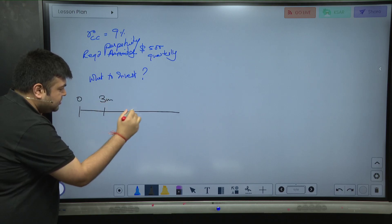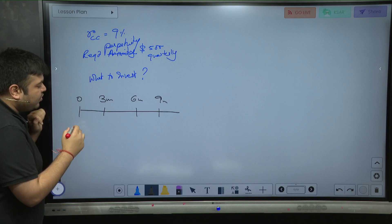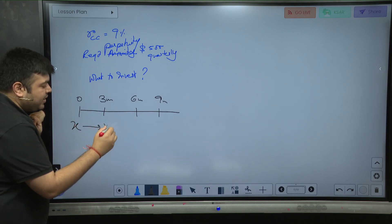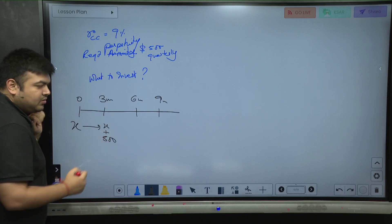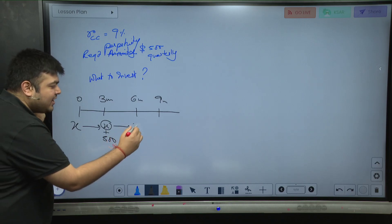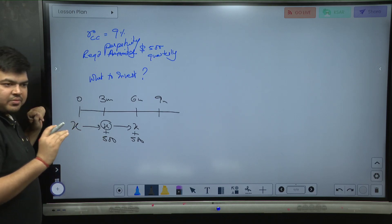I'm going to invest x over here. I want the amount to become x plus 500. I will take out 500, and then x will get reinvested over here.